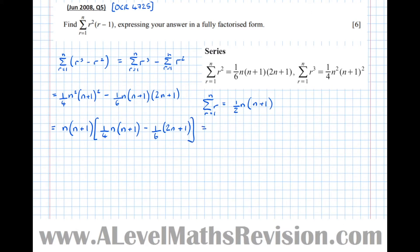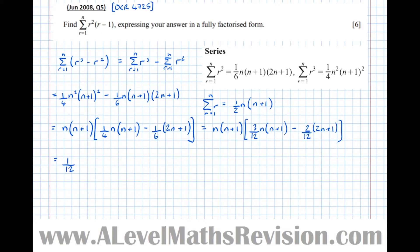It's now going to help to get both fractions, a quarter and a sixth, with a common denominator. A quarter and a sixth both go into a twelfth, so equals n times n plus 1 and a quarter is 3 twelfths times n times n plus 1, take a sixth which is 2 twelfths times 2n plus 1. Now we can take out a factor of a twelfth: equals a twelfth times n times n plus 1, and taking the twelfth out from the front, so that becomes 3n times n plus 1 take 2 times bracket 2n plus 1.